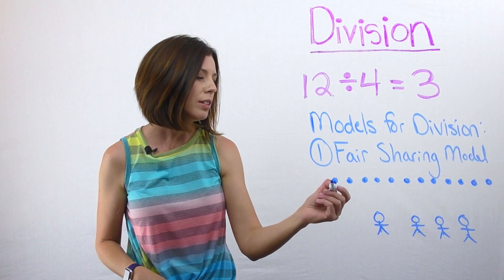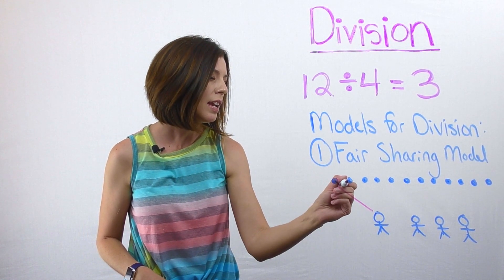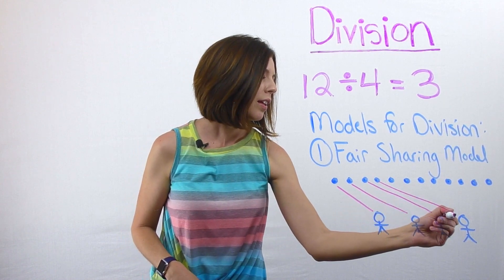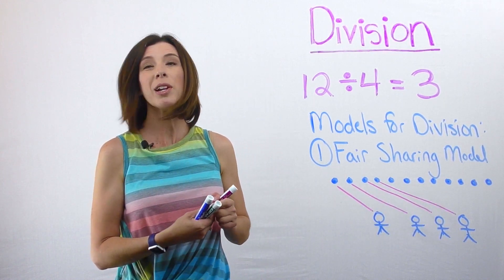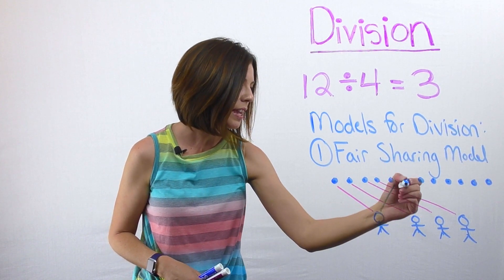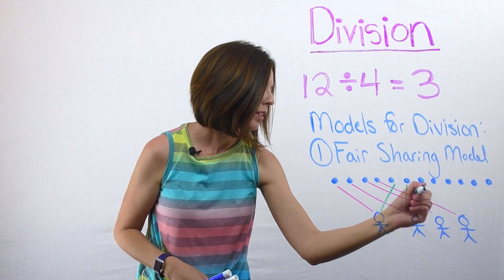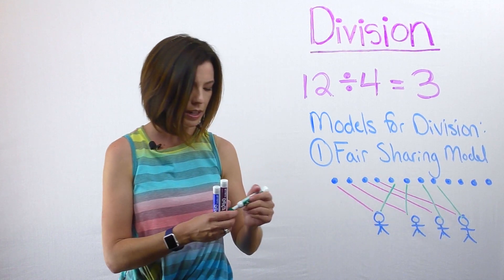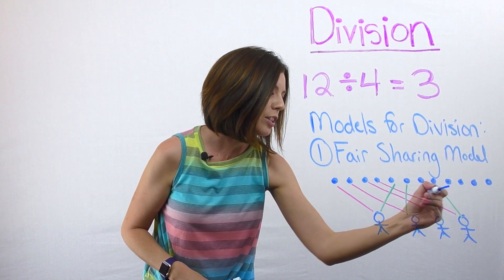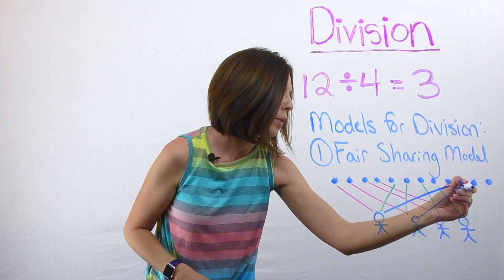In this model, I'm literally taking one candy and giving each of my friends that one candy. Then I'm going to go to the second round. This person gets this candy, this one, this one, and this one. Then I decide that I can go a third round, and they're each going to get one at a time.